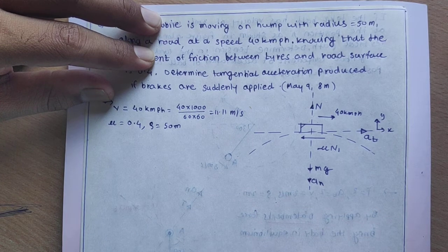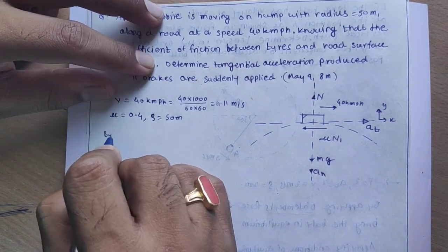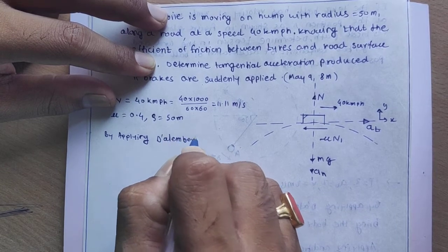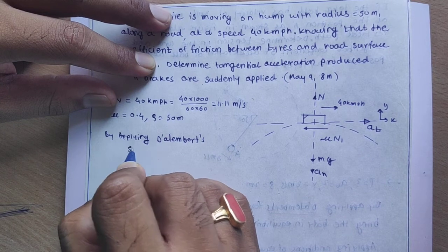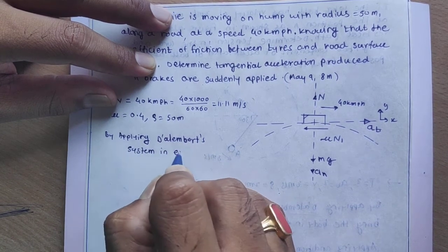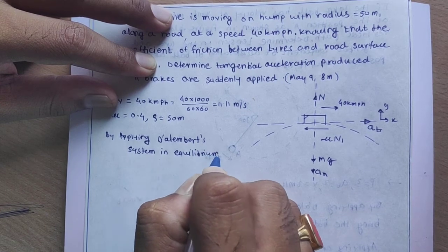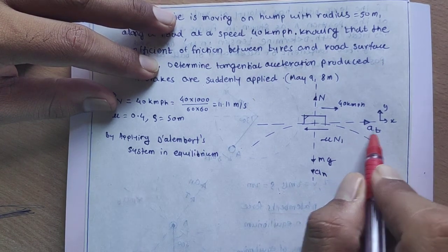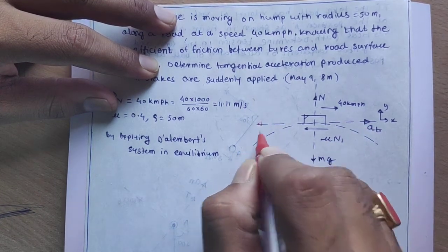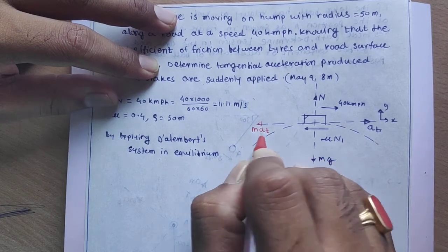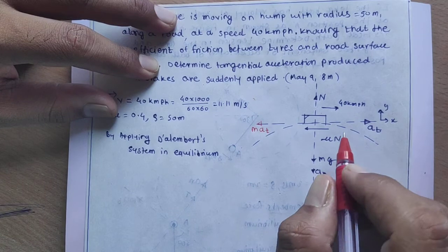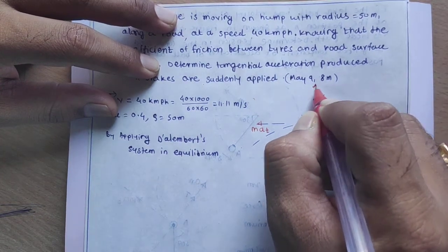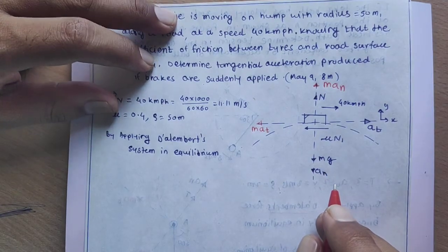Now we have to apply D'Alembert's principle. By applying D'Alembert's principle, we bring the system into equilibrium and then apply the conditions of equilibrium. Since tangential acceleration AT acts in the rightward direction, we apply a force M·AT in the opposite direction. Since AN is directed towards the center, we apply M·AN in the opposite direction to bring the system into equilibrium.